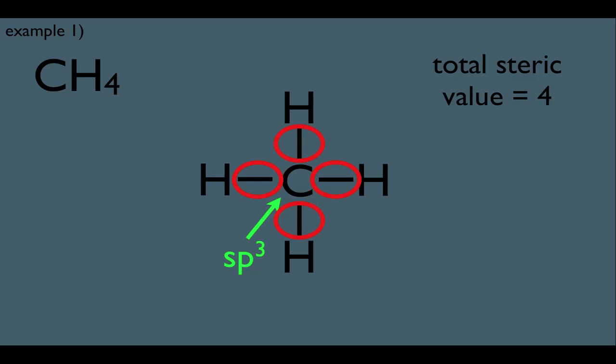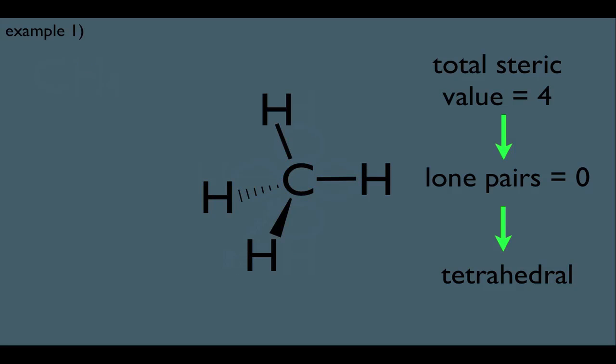The next thing you do is count how many lone pairs the central atom has, and he happens to have no lone pairs. Then all you do is think of steric number 4 with zero lone pairs. There's always no exceptions. It means the molecule is going to be tetrahedral, or in other words, it has a tetrahedral geometry. This representation of the molecule is trying to express the fact that all the bond angles are 109.5 degrees. When a central atom has 4 bonds, and all the bonds are 109.5 degrees apart, we would say the molecule has a tetrahedral geometry.